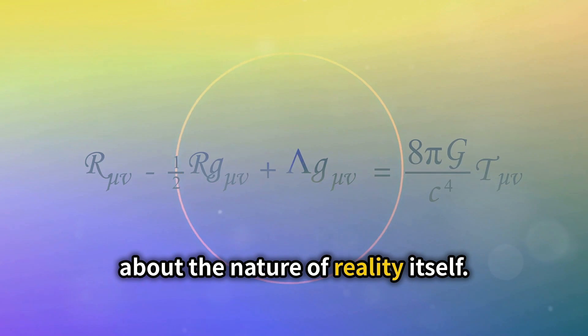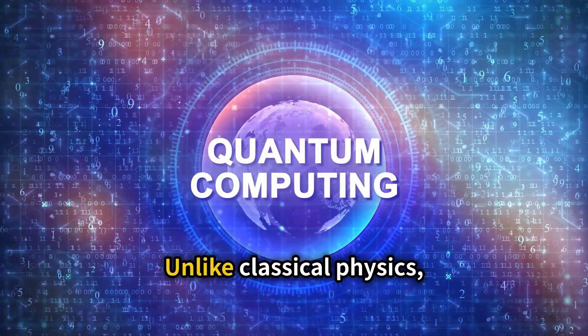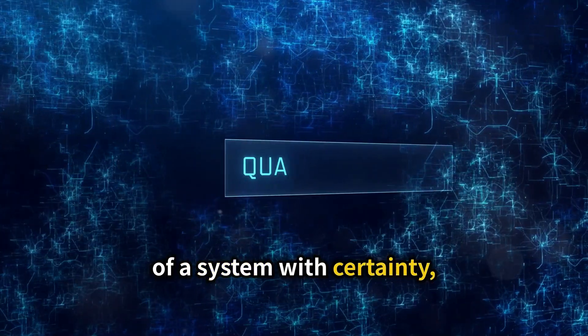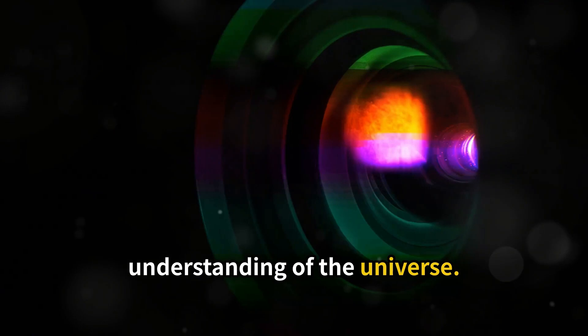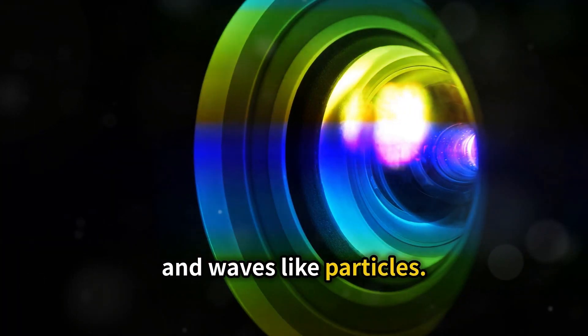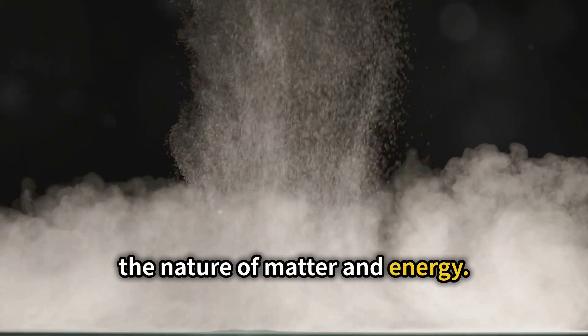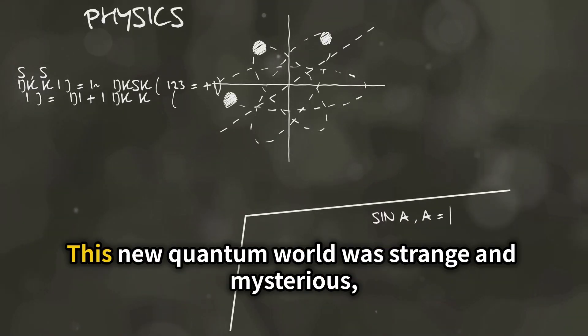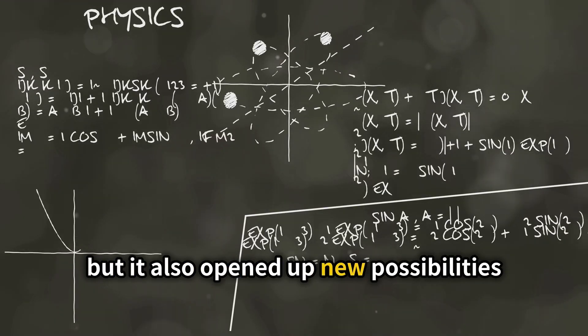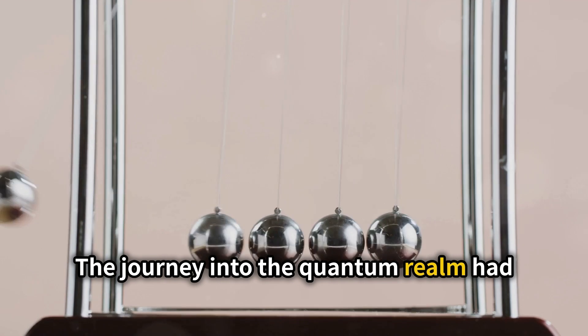It was a new way of thinking about the nature of reality itself. Unlike classical physics, which could predict the future behavior of a system with certainty, quantum mechanics could only provide probabilities for different outcomes. This was a profound shift in our understanding of the universe. Particles could behave like waves, and waves like particles. This wave-particle duality was one of the most surprising and counterintuitive aspects of quantum mechanics. It challenged our classical intuitions and required a new way of thinking about the nature of matter and energy. The deterministic clockwork universe of classical physics gave way to a world governed by chance and uncertainty. This new quantum world was strange and mysterious, but it also opened up new possibilities for understanding and manipulating the fundamental building blocks of the universe. The journey into the quantum realm had only just begun, and it promised to revolutionize science and technology in ways that were unimaginable at the time.